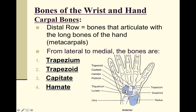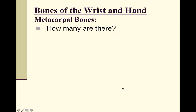The hamate is right next to the capitate in the distal row. It has a distinctive little hook, visible on imaging, which can be fractured and cause pain. It is also one of the easily palpable carpal bones.